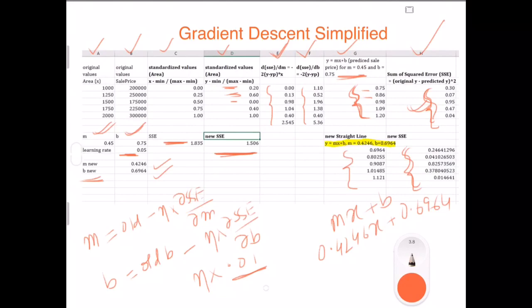What's next? So I am going to do this again, this calculation, so that I get again some new values of M and new values of B.